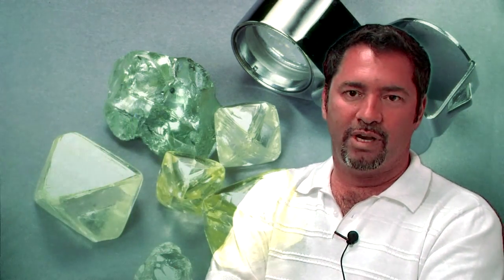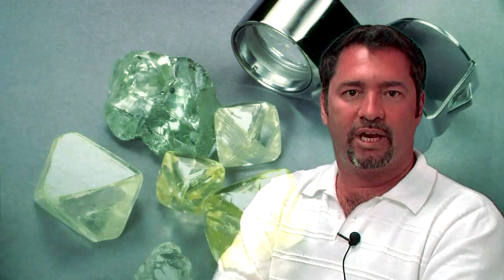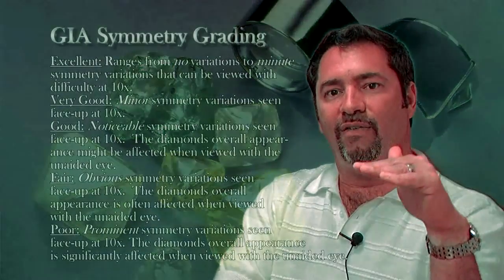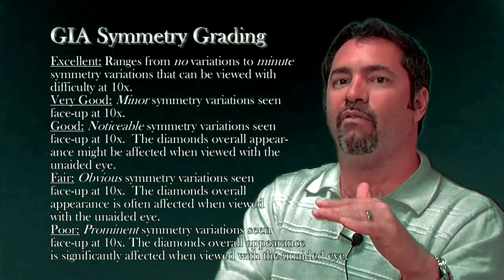Symmetry grading in GIA laboratories uses a scale that runs from excellent, very good, good, fair, and poor.